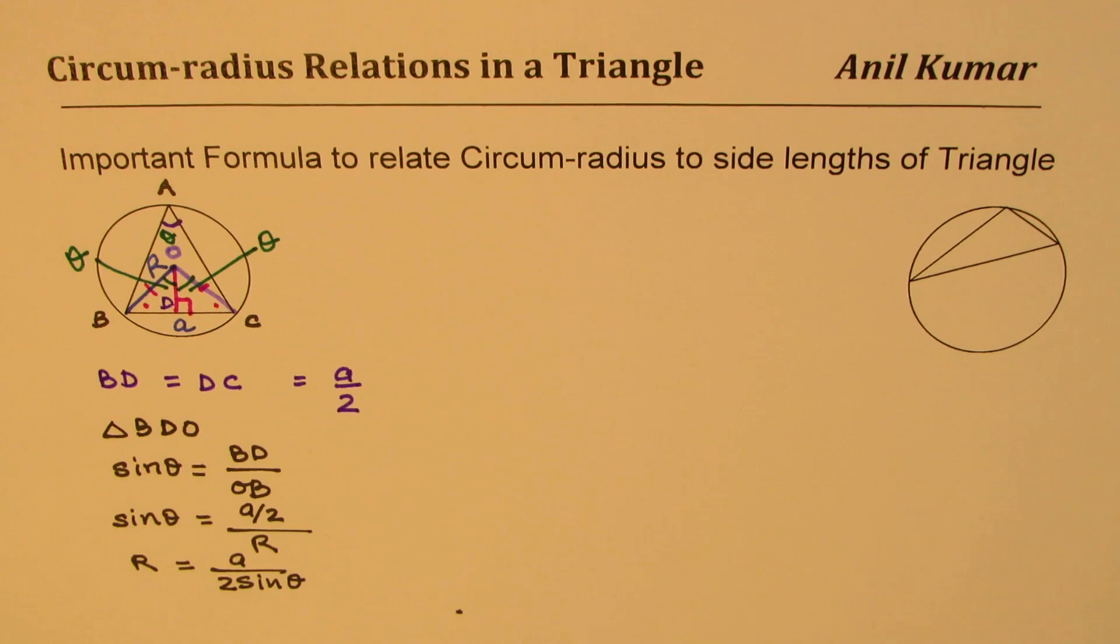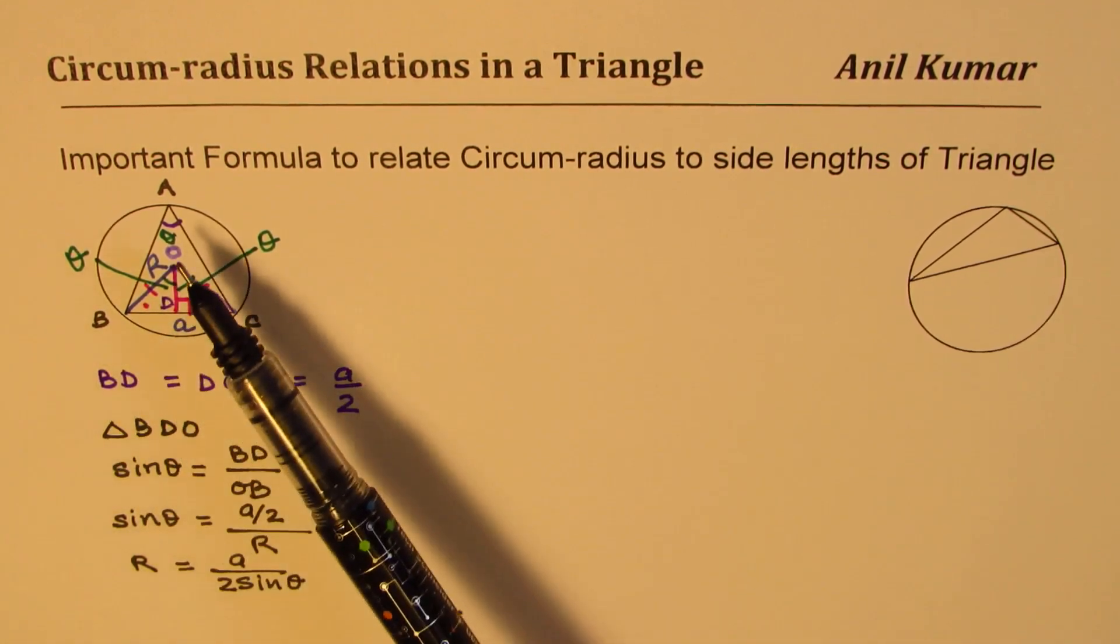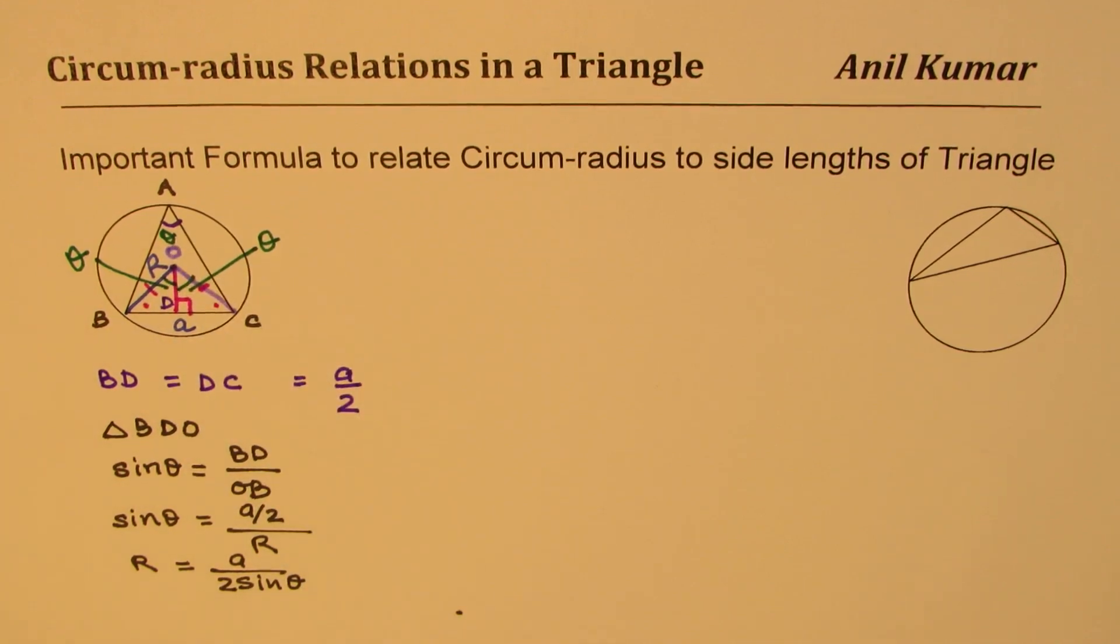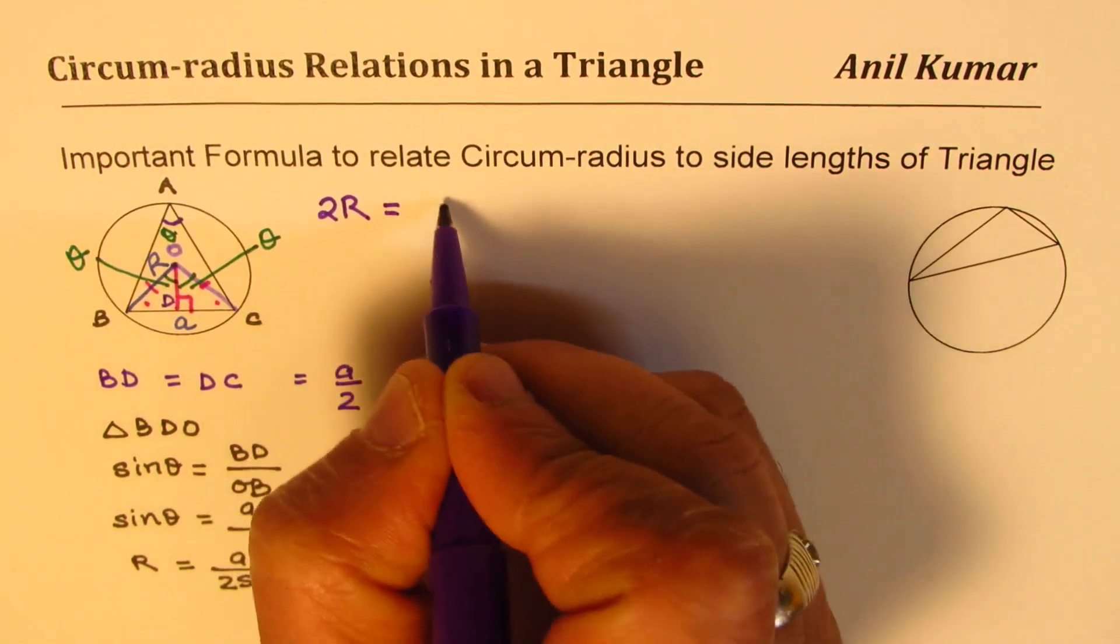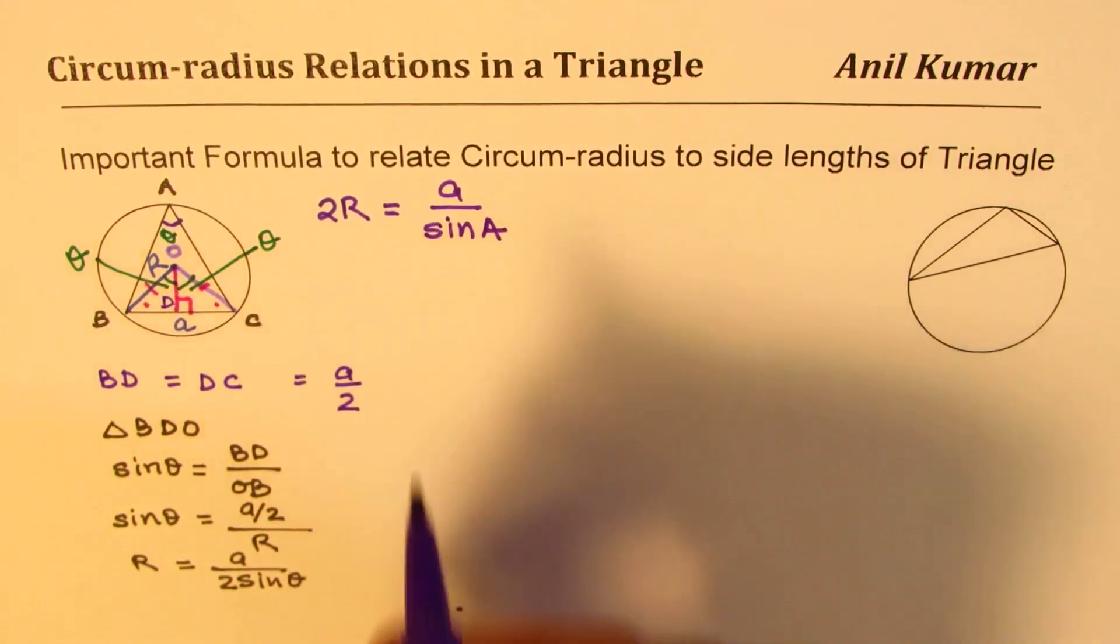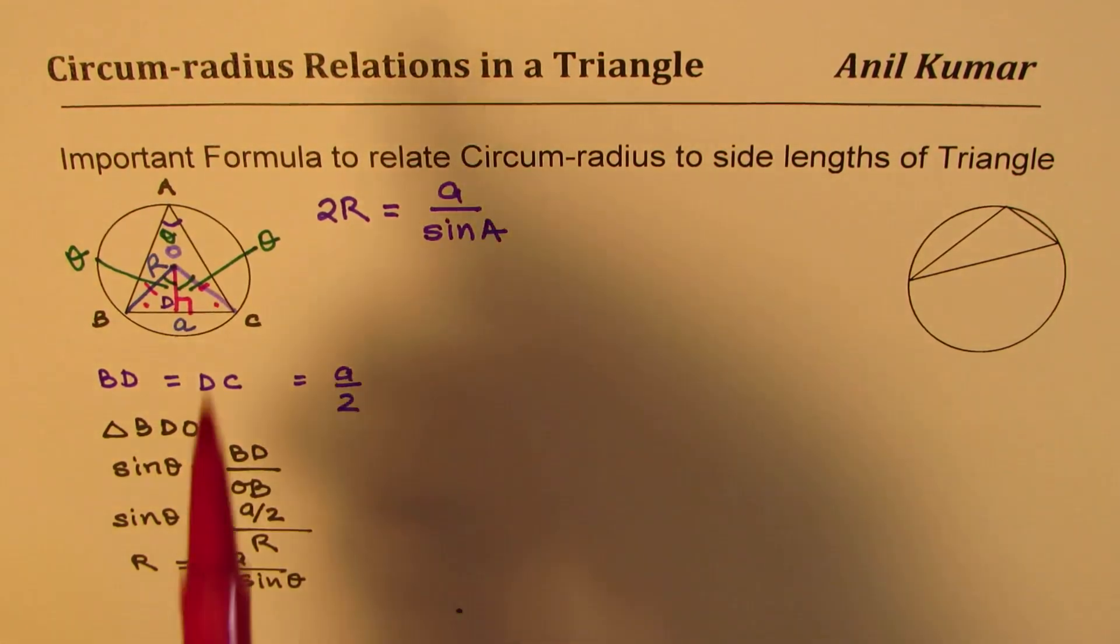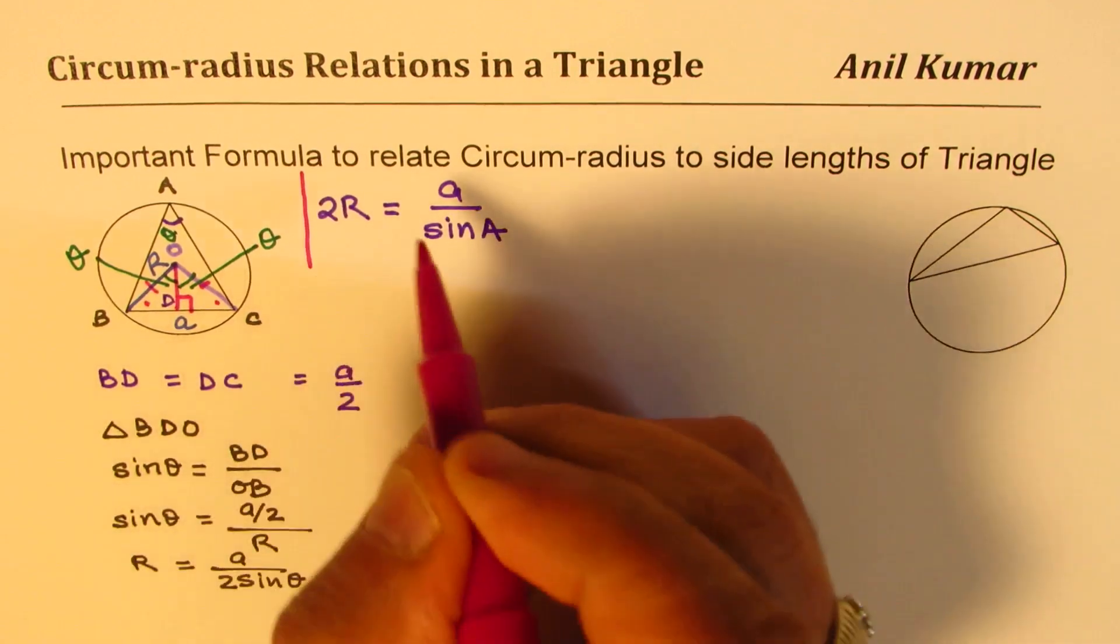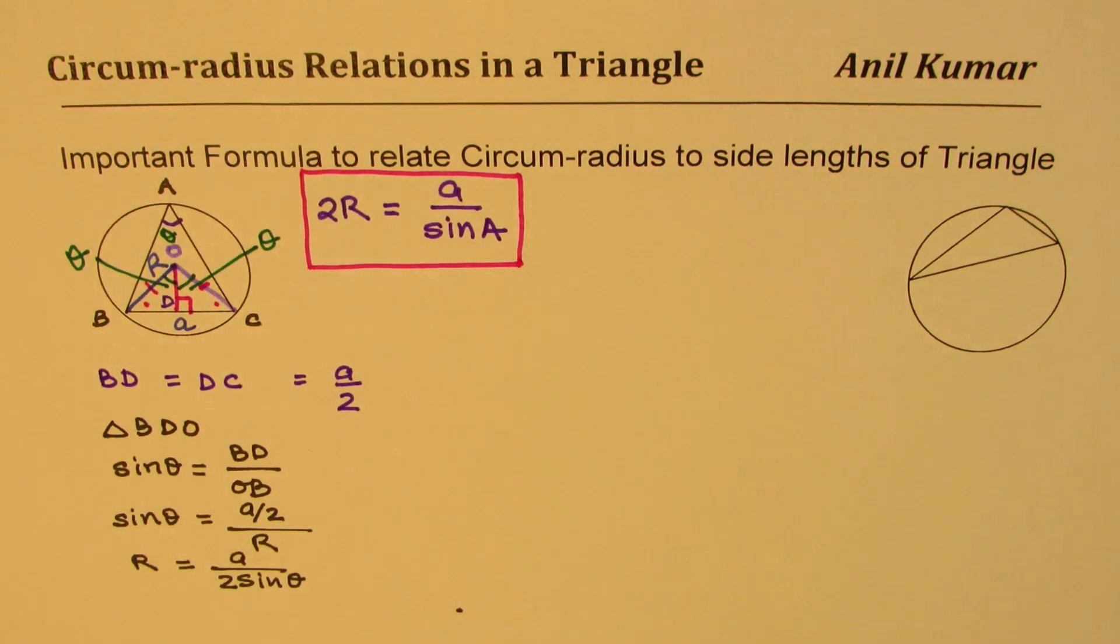That becomes a relation between the side and the angle opposite. If you want to relate it to sine law situation, you can actually write this formula as 2R equals to a over sine A, because this angle theta is actually the angle A. That is how we can actually relate circum-radius with angles and sides of a triangle. That's a very important formula.